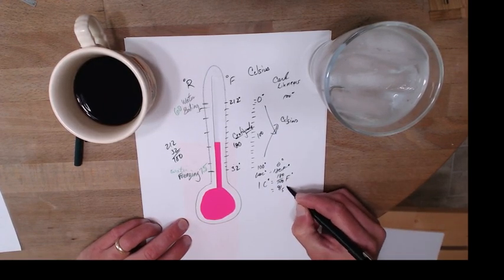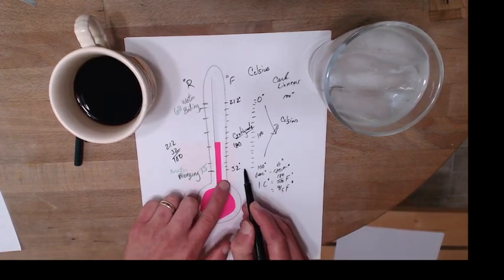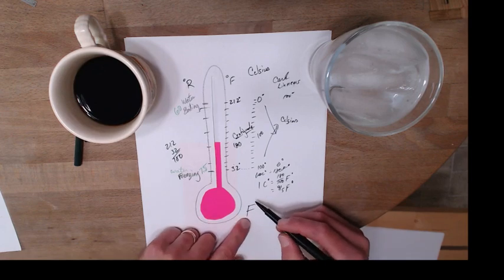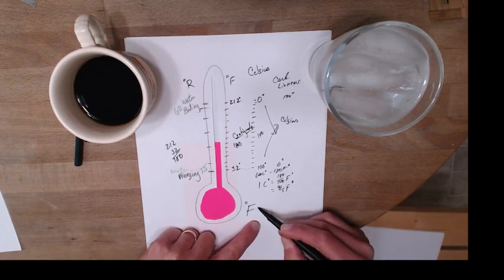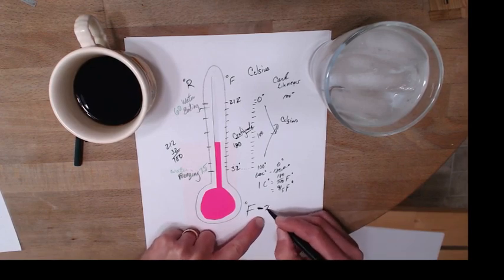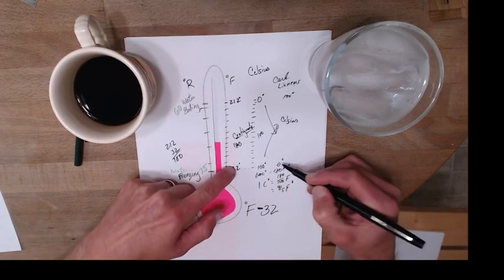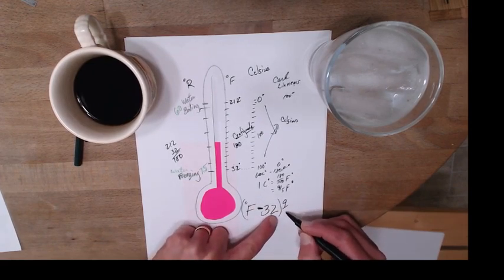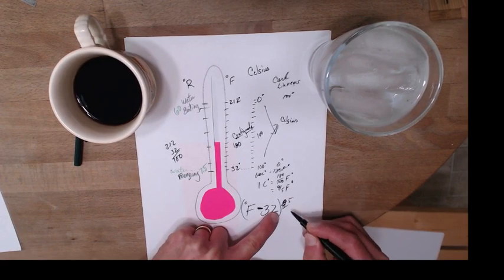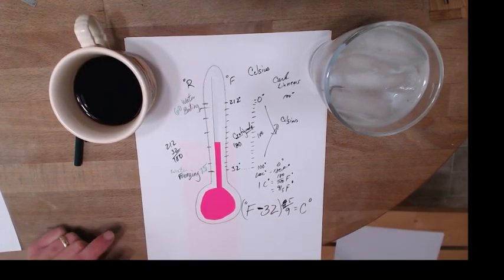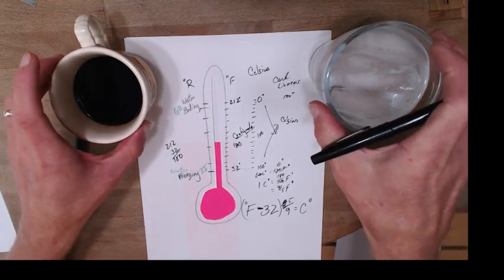However, they don't start at the same spot. So if you're going to go from degrees Fahrenheit to Celsius, you have to subtract 32. That kind of resets your system. And then you're going to take this times—I'm sorry, five-ninths, five-ninths—and then that's going to give you Celsius degrees. Let's do a quick example.